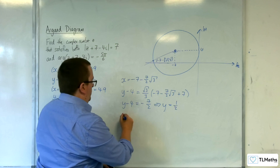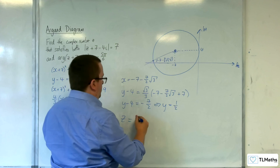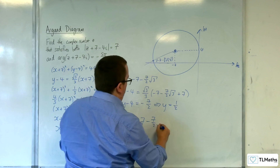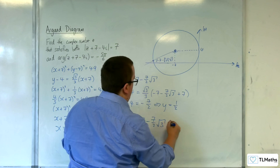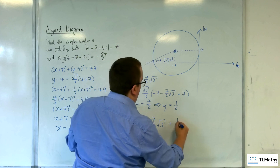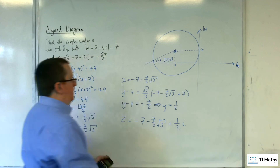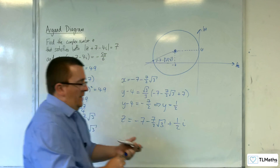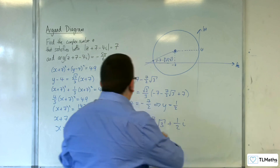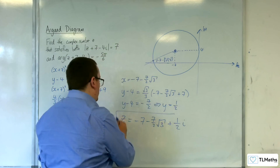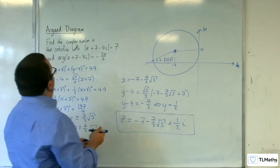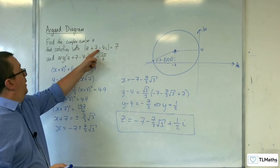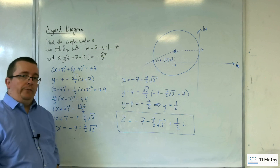So z equals minus 7 take away (7/2)√3 plus (1/2)i. And that is the complex number that satisfies both of those two equations.